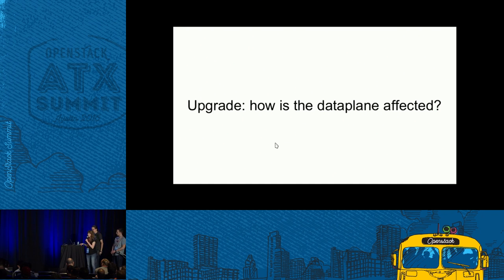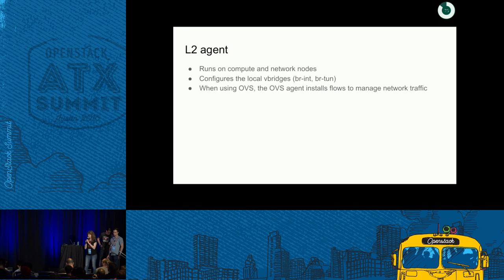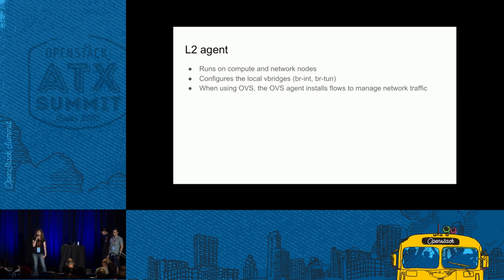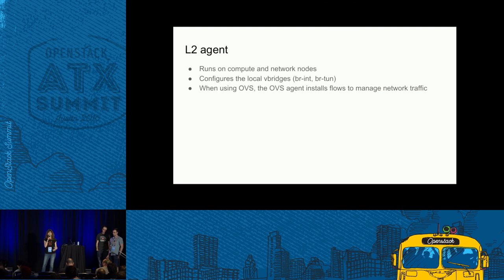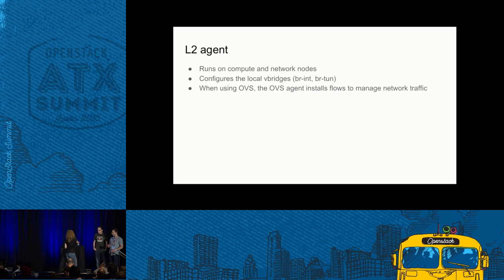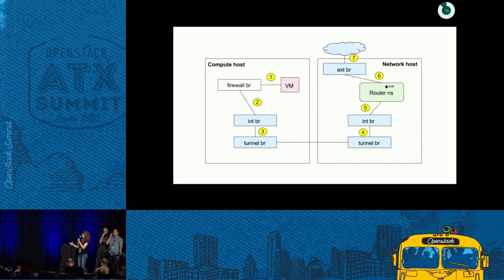Now let's see how the data plane is affected during the upgrade. The L2 agent is the agent in charge of L2 traffic. It runs on compute and network nodes, and it's the agent that configures the local switches. If you're using Open vSwitch, it basically installs flows so that traffic can flow correctly. You can imagine that to get a packet from one host to another, many flows are required.